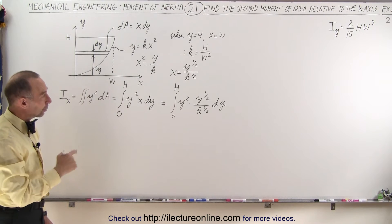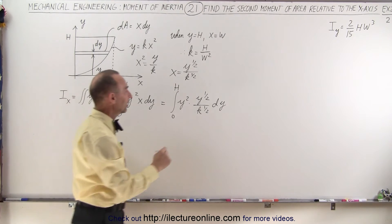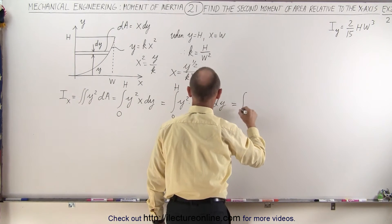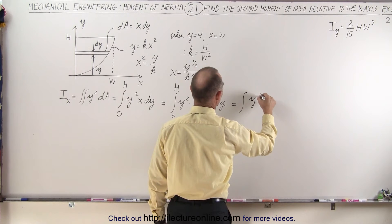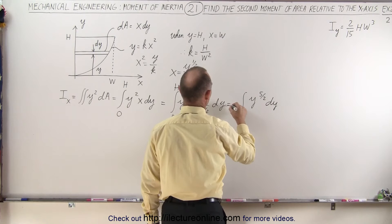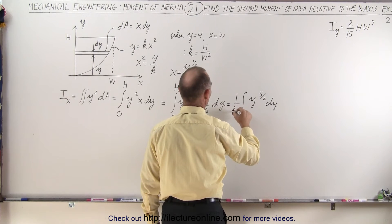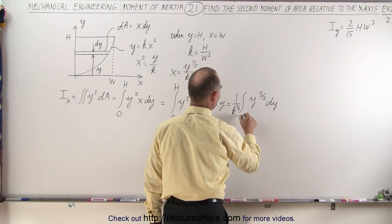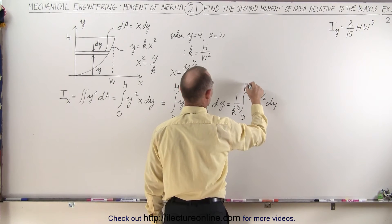We can take k to the one-half power out, and this can then be simplified to the integral of y to the five-halves dy, and we'll write 1 over k to the one-half outside the integral sign, integrating from 0 to h.